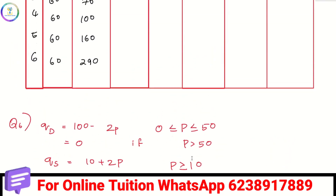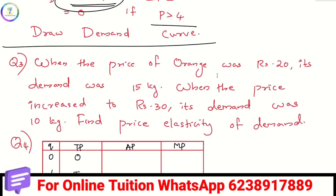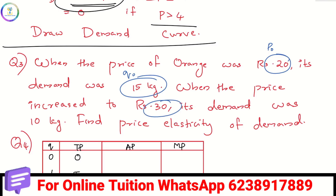The next important question is the price elasticity calculation. The price of orange is 20, so P0 equals 20. If demand is 15, Q0 equals 15. If price rises to 30, P1 equals 30. If demand falls to 10, Q1 equals 10. So we have P0, Q0, P1, and Q1.